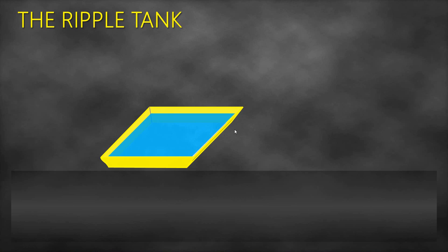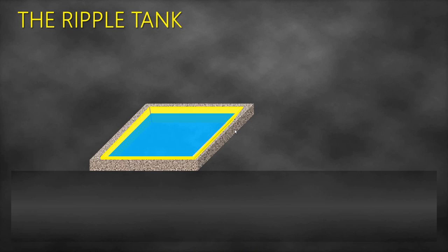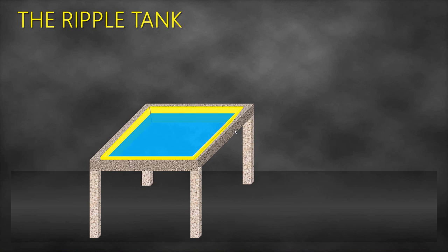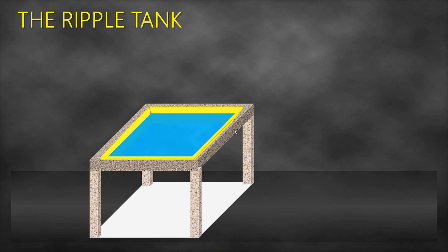The tray is always supported. Below the support or below the tray, we always have a white screen. This white screen is used to observe the waves properly — the shadows of the waves.